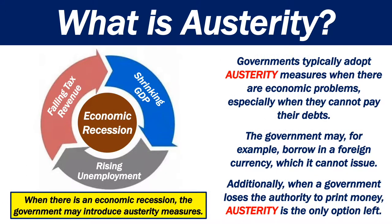Governments typically adopt austerity measures when there are economic problems, especially when they cannot pay their debts. The government may, for example, borrow in a foreign currency which it cannot issue. Additionally, when a government loses the authority to print money, austerity is the only option left.